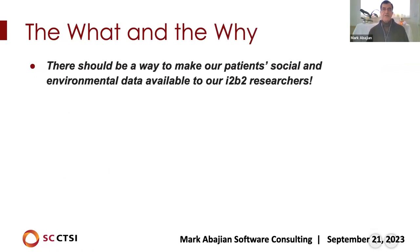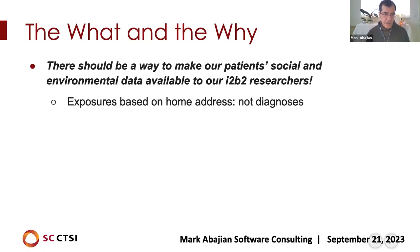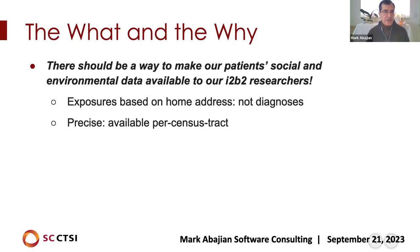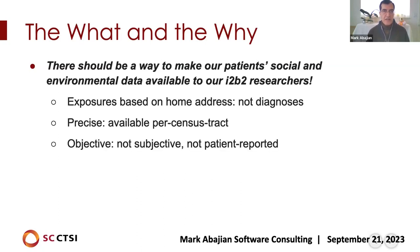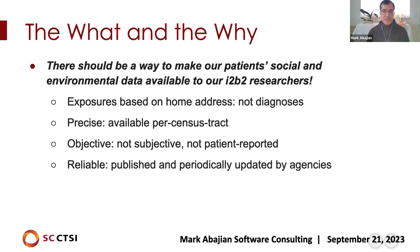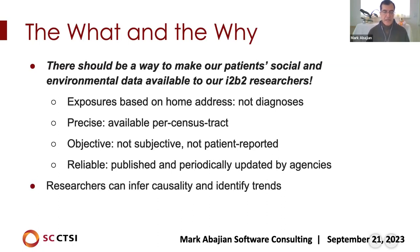So the what and the why: there should be a way to make our patients' social and environmental data available to our I2B2 researchers. These are not diagnoses, but exposures based on a patient's home address — precise information on a per-census-tract basis. The data are objective, not patient-reported. They're reliable because they're published and periodically updated by government agencies. We feel that researchers should be able to infer causality or identify trends when they investigate the social and environmental factors where a patient lives.